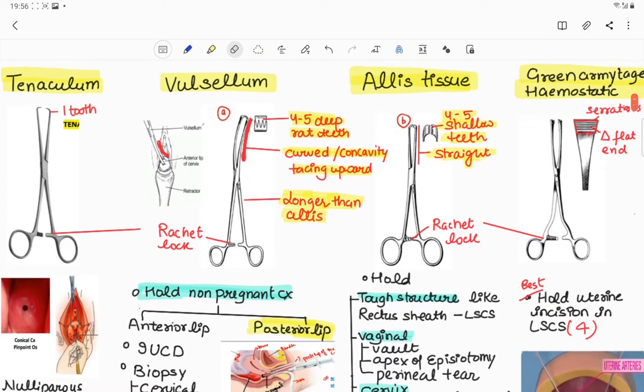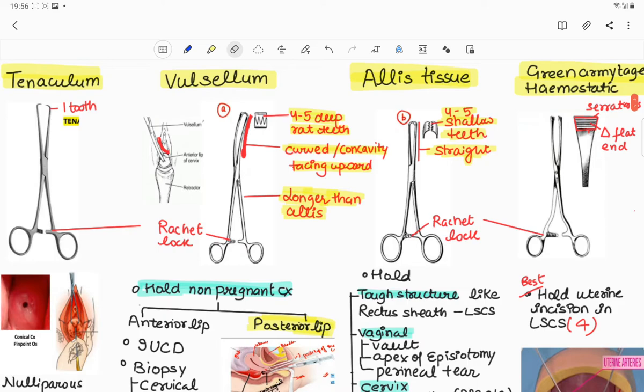So let's discuss about forceps. We will compare Valsellum and Allis tissue forceps. Valsellum at the end contains 4 to 5 deep rat teeth and Allis contains 4 to 5 shallow teeth. There is a curve or concavity facing upward in Valsellum on holding the anterior lip of cervix, and both contain a ratchet lock.